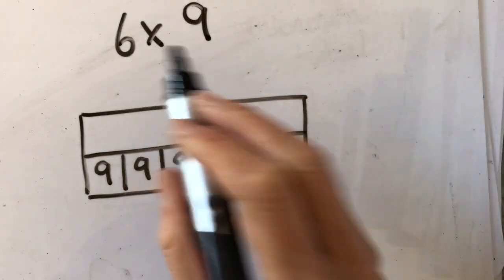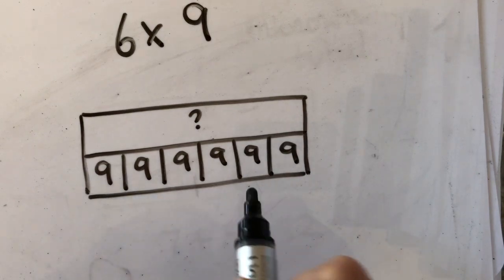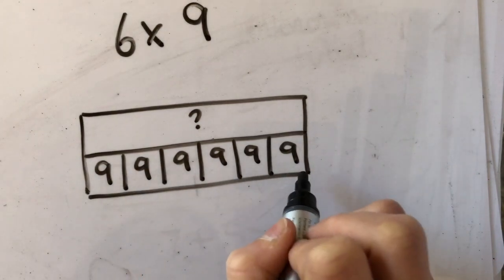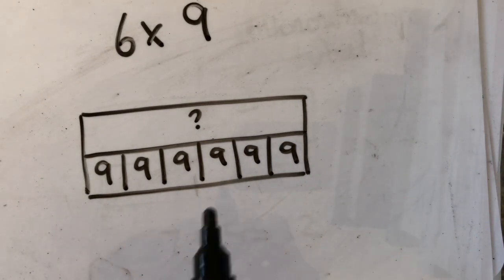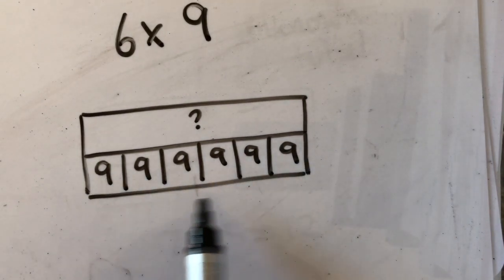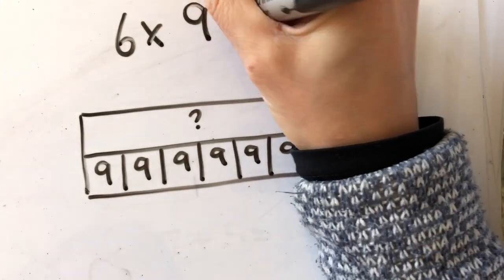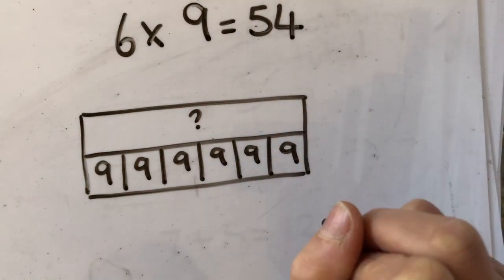So six groups of 9—I've got 9 six times. That's 1, 2, 3, 4, 5, 6 groups, and in each of my groups the value is 9. That can help me represent the fact that it's 9 six times and that my answer is 54. That's my unknown number.